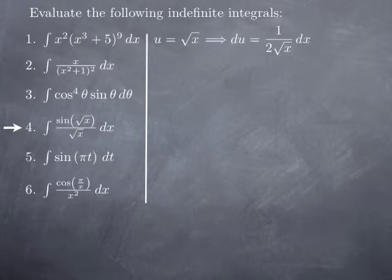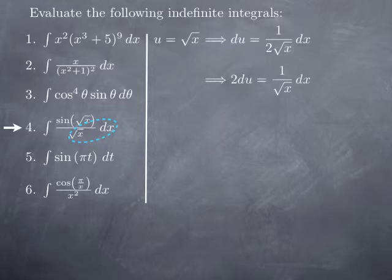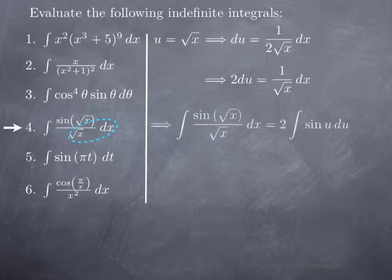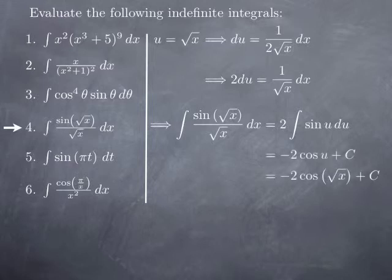Again, we try to match that with what we have in the integral, which is 1 over root x dx — not 1 over 2 root x dx. But that's easy to obtain: we just multiply both sides by 2, and we get that 2 du equals 1 over root x dx, which is what we have circled in blue. So at the top I have sine of u, and what remains is simply 2 du. Pulling the 2 out, I obtain 2 times the integral of sine u du. The antiderivative of sine is negative cosine, so I obtain negative 2 cosine u plus a constant. Substituting back square root of x for u, I obtain negative 2 cosine of root x, plus a constant.